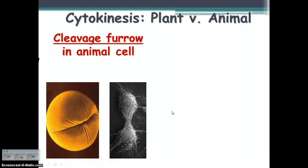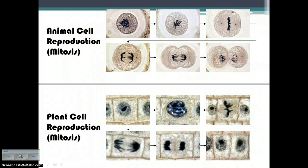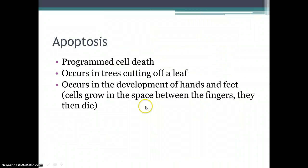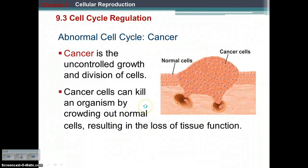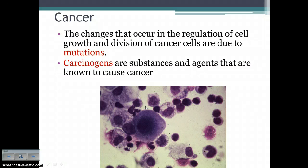Take a look at these pictures of the cleavage furrow forming in animal cells and the cell plate forming in plant cells, and quiz yourself on the stages of mitosis. I'm going to go through these slides so you can get your definitions, but we will actually discuss cancer in class — so write down those definitions on your notes organizer and we will discuss them more in class.